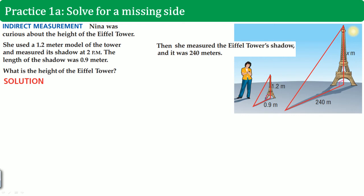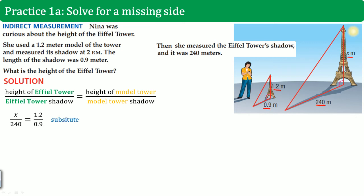Here, the solution is you have to set up the proportion. The proportion that is set up here is the height of the Eiffel Tower divided by the height of the Eiffel Tower shadow. That's going to be X over 240 is equal to the height of the model tower divided by the model shadow. 1.2 divided by 0.9. It should look something like that. Then, cross multiply, divide, and you get X equals to 320.